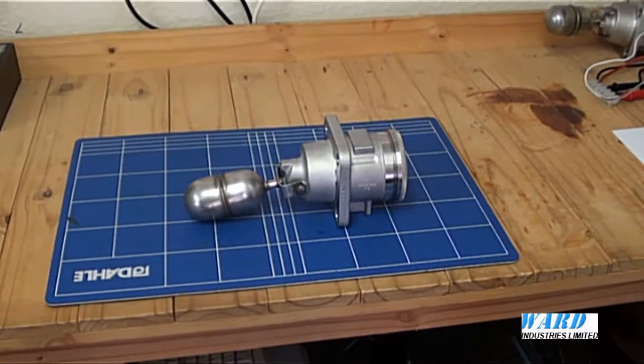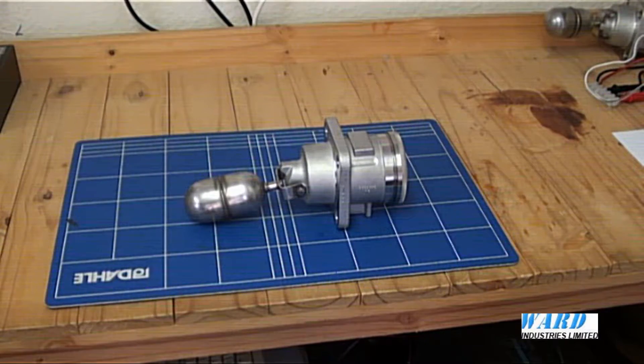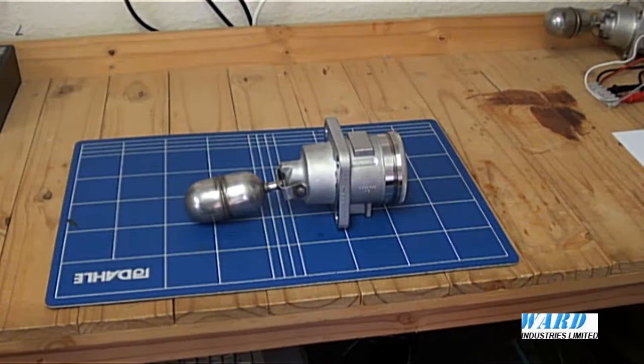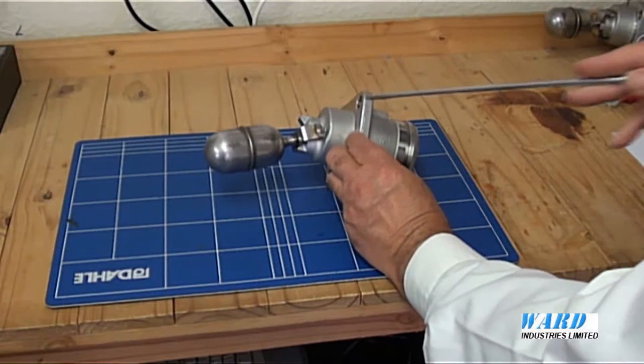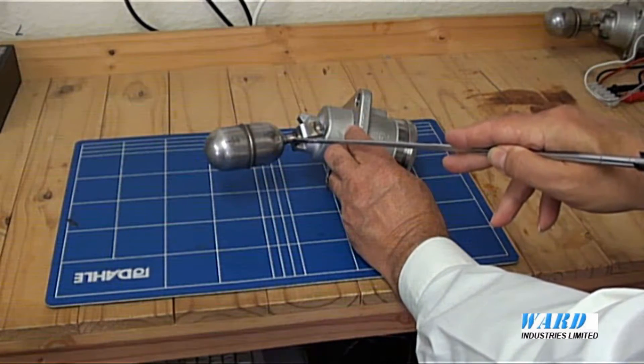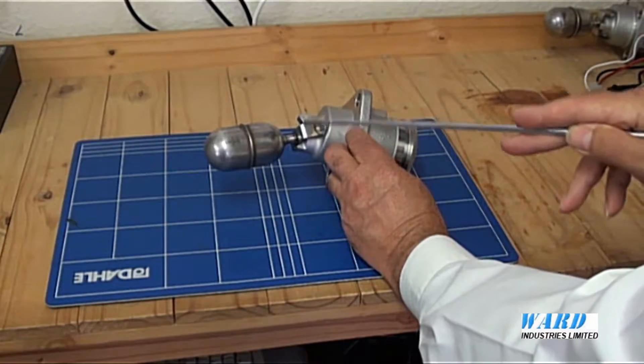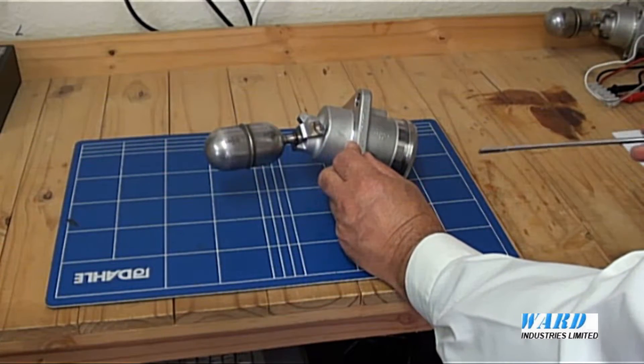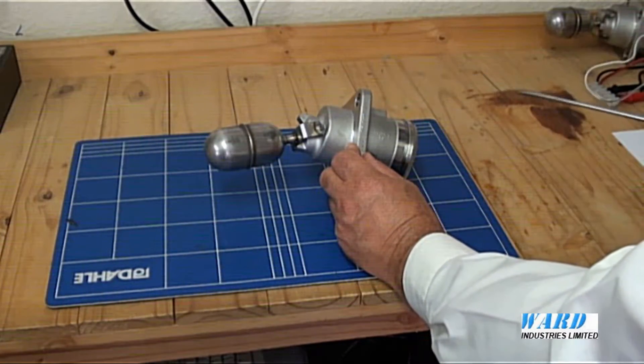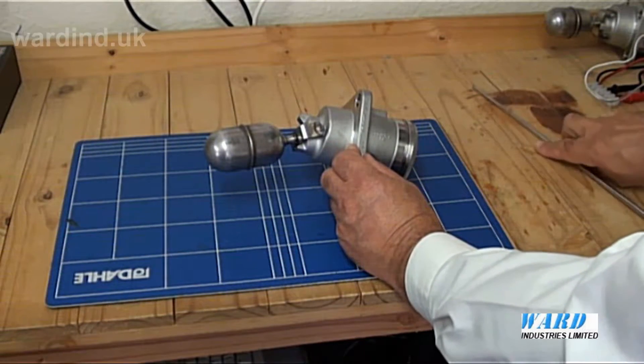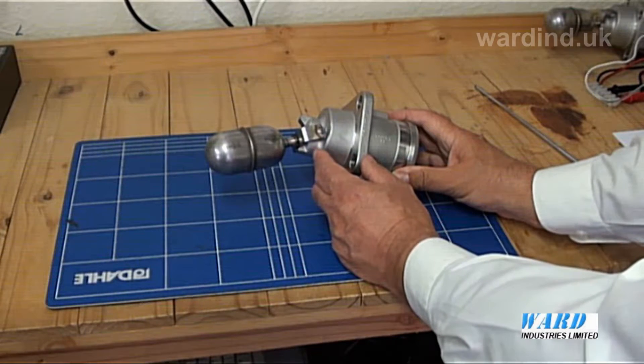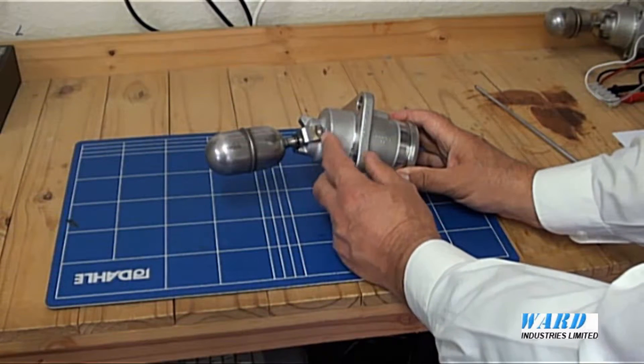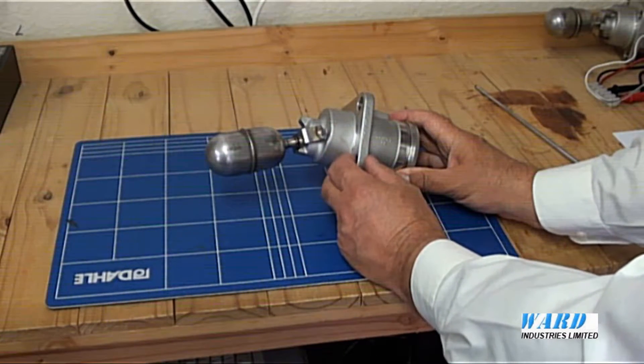The principle of operation of the M-Switch is magnetic repulsion. One permanent magnet forms part of the float assembly which rises and falls with the changing level, so we have a magnet in here. A second permanent magnet is positioned within the switch body here. The magnets are arranged so that like poles will face each other at the switching point through the non-magnetic wall of the switch body.